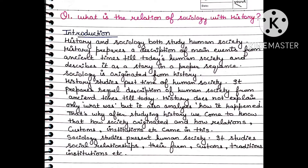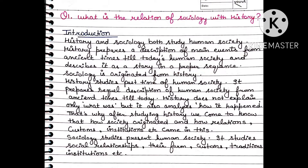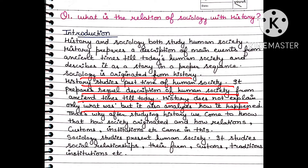The first question is: what is the relation of sociology with history? In the introduction, you have to write that history and sociology are both subjects focused on human society. History describes the main events of human society from ancient times to today in proper sequence and story-wise detail. Sociology is originated from history as a branch, and history covers the past time of human society.